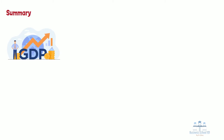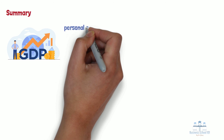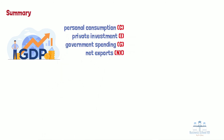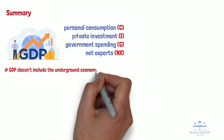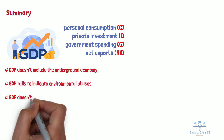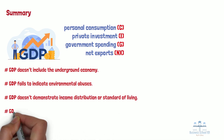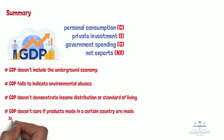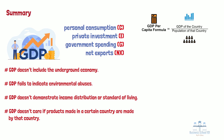Now, let's do a quick review of today's topic. GDP stands for Gross Domestic Product and is used as a reference point for the health of national economies. It is calculated by adding four figures together: personal consumption, private investment, government spending, and net exports. Although GDP is one of the most widely used tools to measure a country's economy, it suffers from several major limitations: it doesn't include the underground economy, it fails to indicate environmental abuses, it doesn't demonstrate income distribution or standard of living, and it doesn't care if products made in a country are made by that country's own citizens. To address these limitations, we learned about three alternate indexes. GDP per capita breaks down a country's economic output per person and is calculated by dividing a country's GDP by its population.